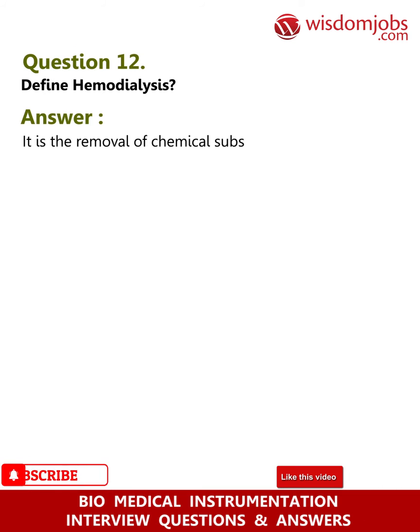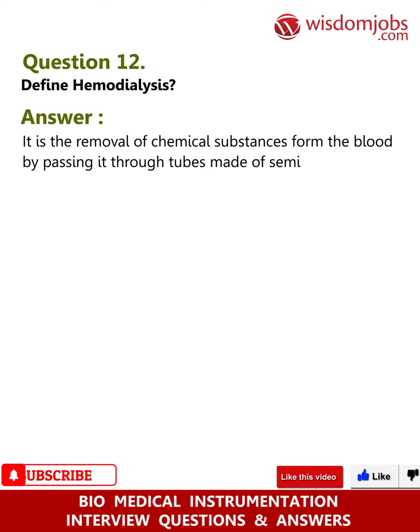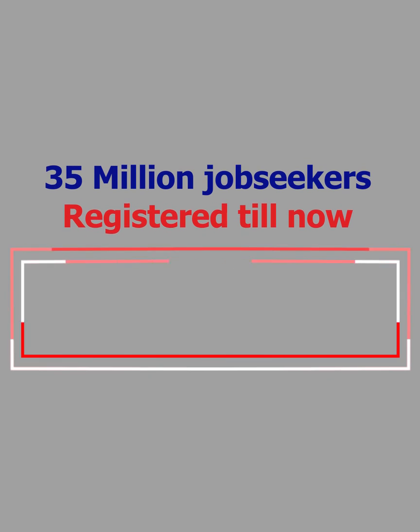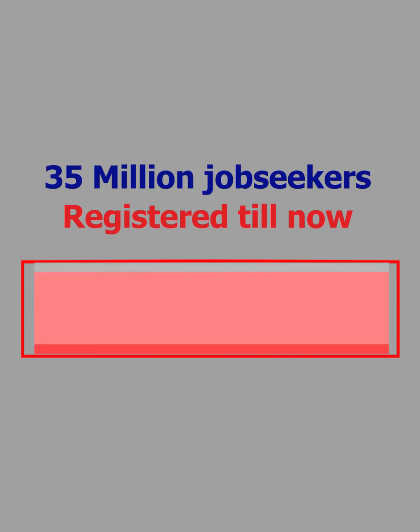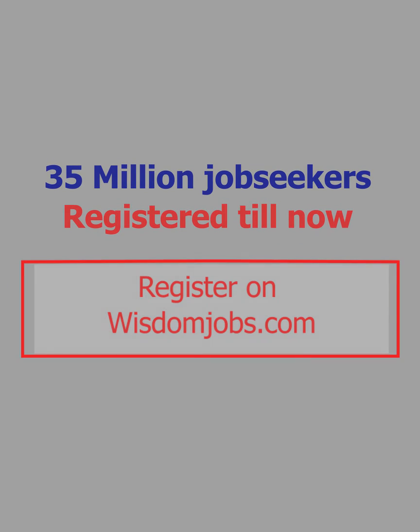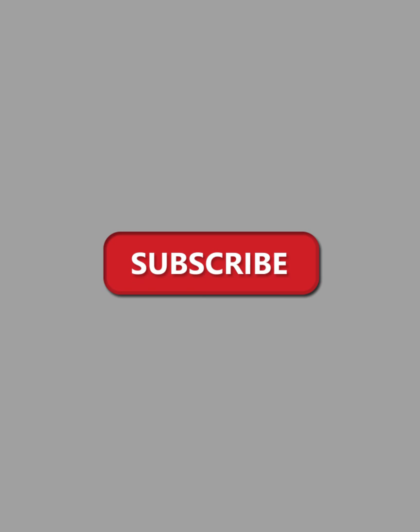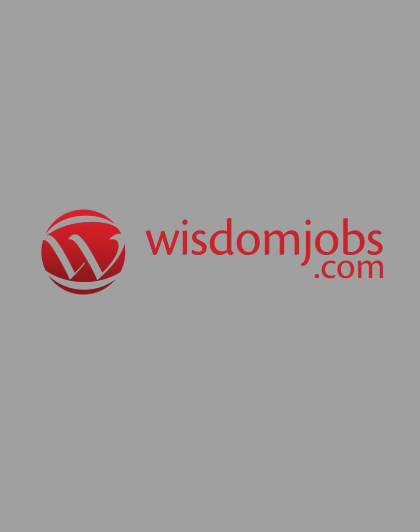Question 12: Define hemodialysis. Answer: It is the removal of chemical substances from the blood by passing it through tubes made of semi-permeable membrane.